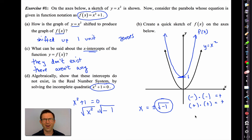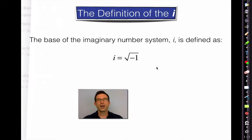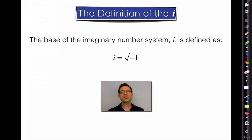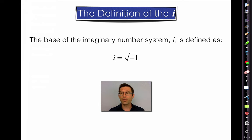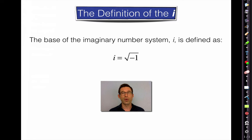The number i? Yes — so was e. Let's talk about the definition of i. The base of the imaginary number system, known as i, is defined as i equals the square root of negative one. So the base of the real number system is the number one — one plus one gives you two, one divided by two gives you one-half, et cetera — and one is the most important number in the real number system. i is the most important number in the imaginary number system.